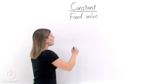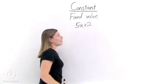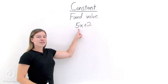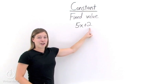Let's look at an example. Let's look at the expression 5x plus 2. In this case, the 5x term varies depending on the value of x, but the 2 term does not vary in value.